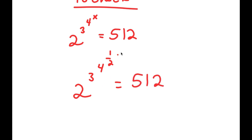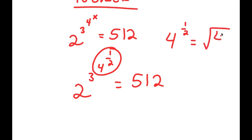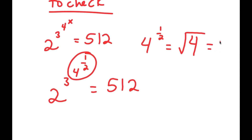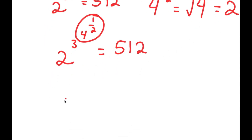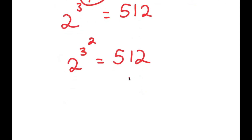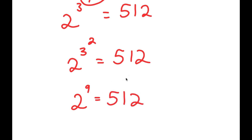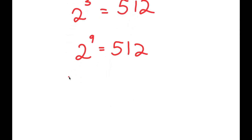I'm going to work my way down from the top. I first start with 4 to the power of 1 half, which is the same thing as the square root of 4, and the square root of 4 is equal to 2. So I have 2 to the power of 3 to the power of 2 is equal to 512. Now 3 to the power of 2 is equal to 9, so I have 2 to the power of 9 is equal to 512. And 2 to the power of 9 is indeed 512, as we already stated. So we get 512 is equal to 512. ✓